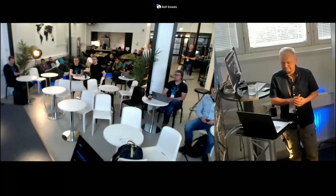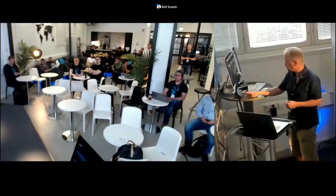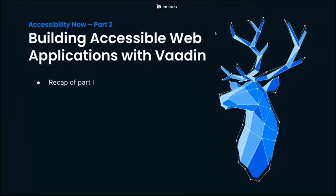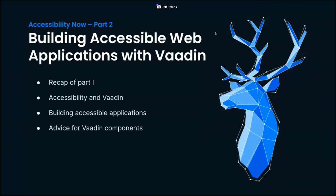The agenda for part two is: first, I'll quickly recap the most important parts of part one; then we'll talk about the situation with accessibility in the Vaadin platform; then we'll look at ways to ensure your application is accessible, including Vaadin-specific advice; and at the end we'll have a Q&A. Those watching the live stream can type questions into the question box.